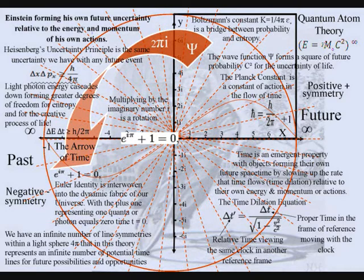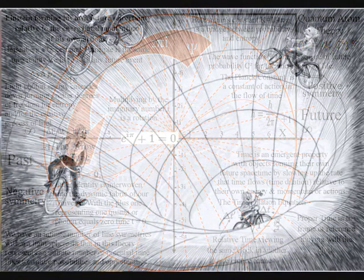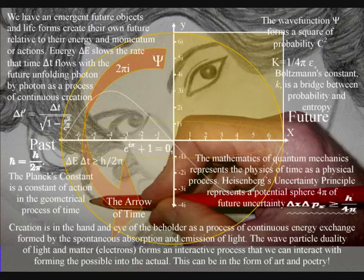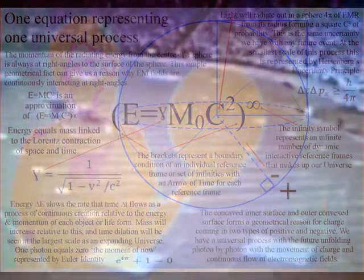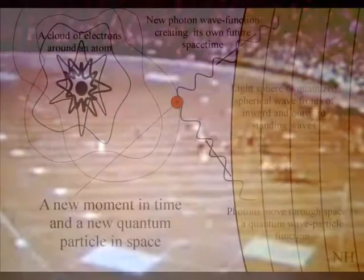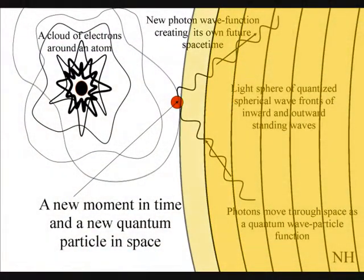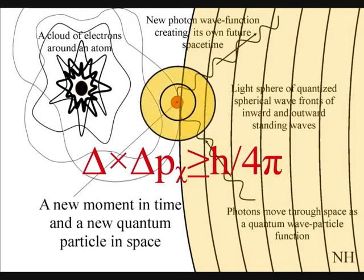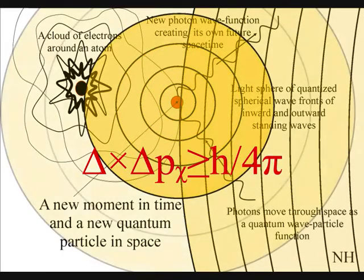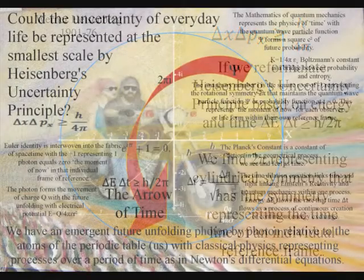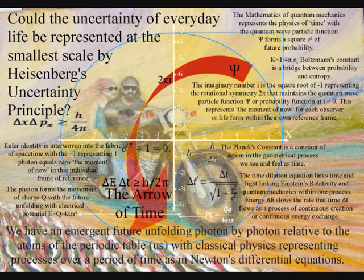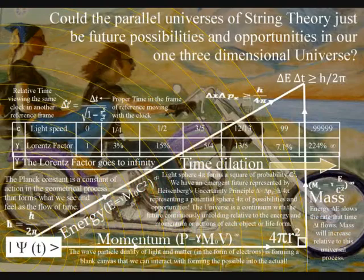For free will to exist as part of a physical process that can be explained by physics, one of the most fundamental things we need is uncertainty. This uncertainty is formed by light interacting with the electron probability cloud that surrounds each atom. When light is absorbed, it is spontaneously emitted, forming a wave function with an uncertainty that is mathematically represented by Heisenberg's uncertainty principle. In this theory, this is the same uncertainty we have with any future event at the smallest scale of the creative process that we see and feel as the passage or continuum of time.